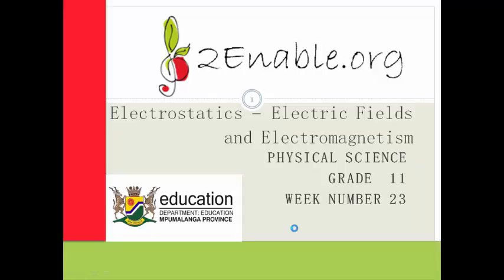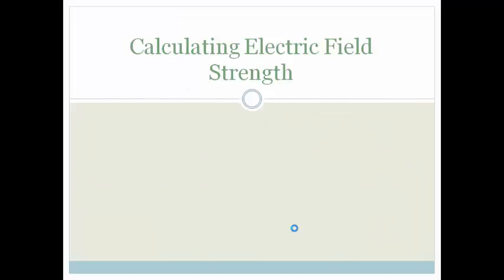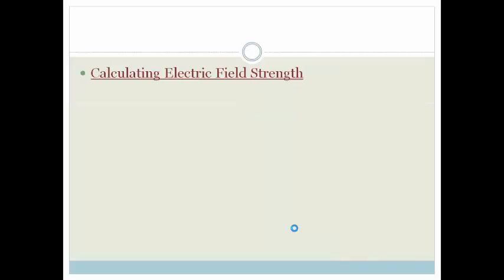G'day grade 11s, welcome to your second lesson in week 23. In the last lesson we learnt about the different shapes of electric fields around different types of charges, whether they be point charges or two different point charges, either oppositely charged, similarly charged, or between parallel plates. In this lesson we're going to join the Mindset Learn team as they teach us how to calculate the electric field strength.